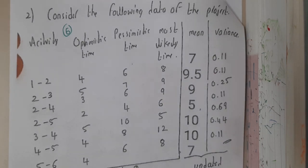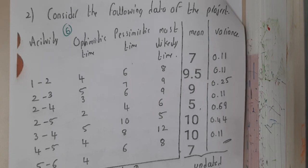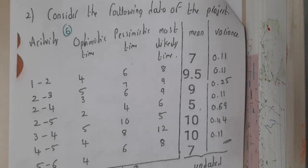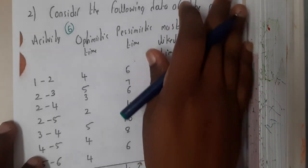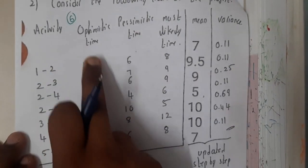Hello guys, we are back with our next lecture. In this lecture, let us go through one more problem to find the critical path mean and variance. Here he gave the activities, the optimistic time, pessimistic time, and most likely time. If you notice here, the rows are being shuffled.